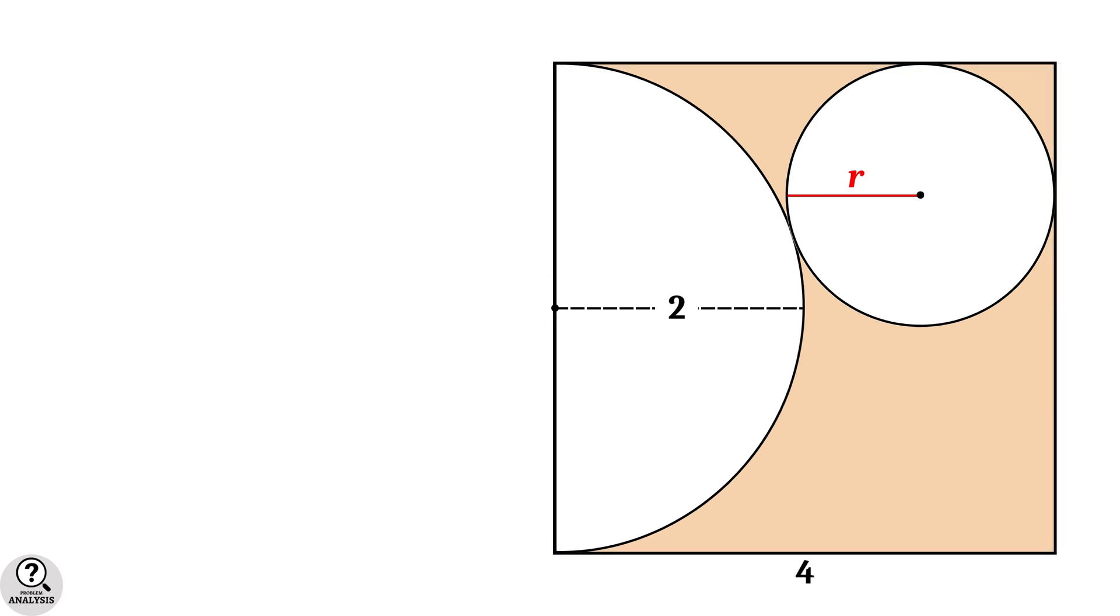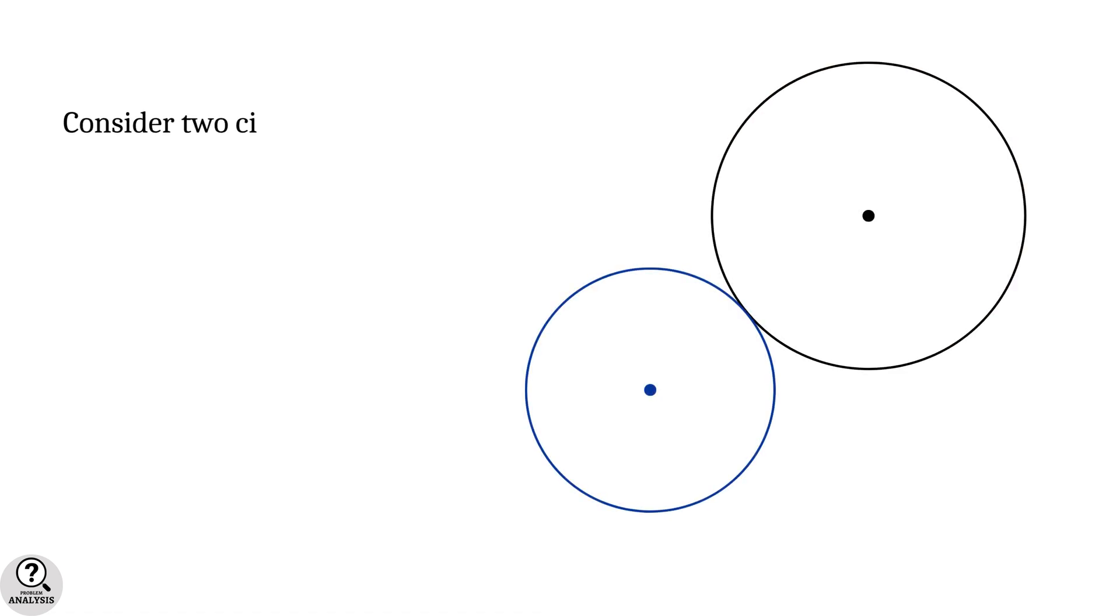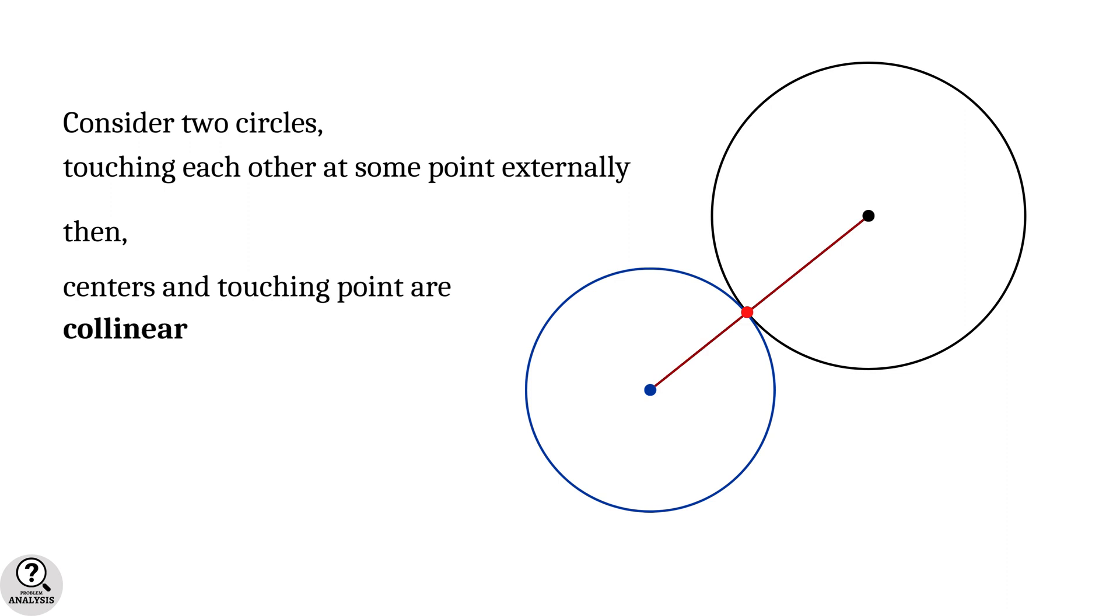Before going to the further explanation, we need to note an important property of tangent circles. Consider two tangent circles touching each other at some point externally. Then, the centers of the circles and their touching point are collinear, that is lying on the same line.